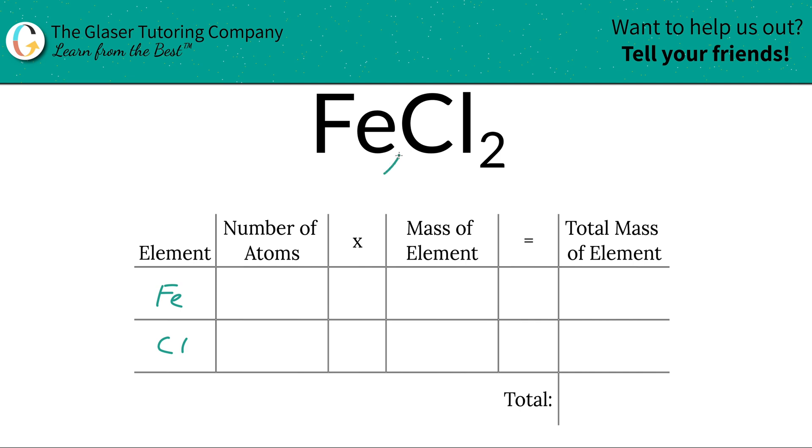Next is to write down the number of atoms of each, and that's where the subscripts come into play. At the bottom of iron, there's an invisible one, so that means there's one iron. At the bottom of chlorine, there's a two, so that tells us there are two atoms of chlorine.